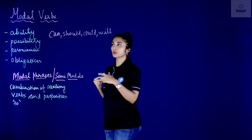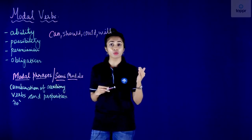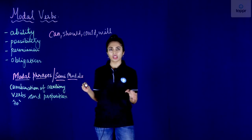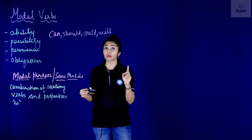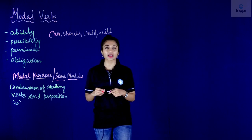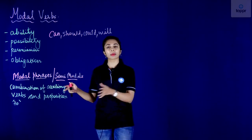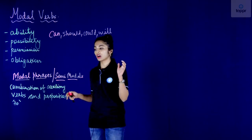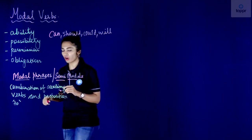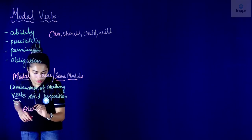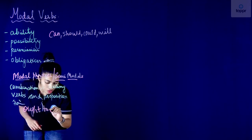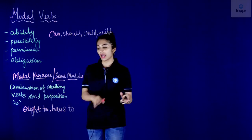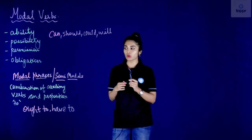We have modal verbs which are one-word verbs. Then we have something known as modal phrases, also known as semi-modals — they are a combination of auxiliary verbs, or helping verbs, and they also include the preposition 'to'. An example of a modal phrase would be 'ought to' or 'have to', where we combine the auxiliary 'have' with the preposition 'to'.